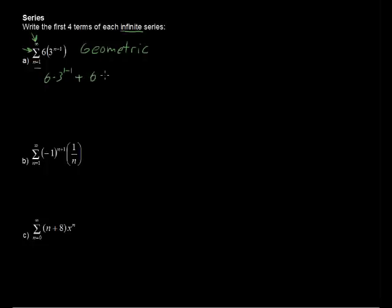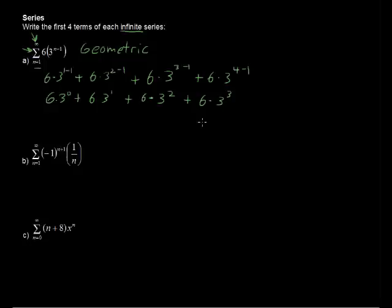When n equals 2, we have 6 times 3 to the 2 minus 1, plus 6 times 3 to the 3 minus 1, plus 6 times 3 to the 4 minus 1. So that's 6 times 3 to the 0 plus 6 times 3 to the 1st plus 6 times 3 squared plus 6 times 3 to the 3rd.